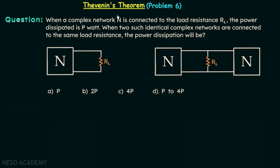We have a complex network N which is connected to the load resistance RL, and the power dissipated through load resistance RL is equal to P Watt. This scenario is shown here: a complex network N connected to the load resistance RL, with P being the power dissipated in Watt.